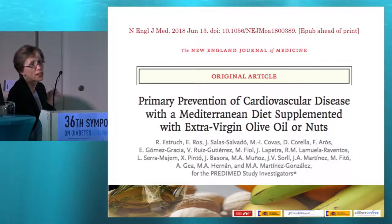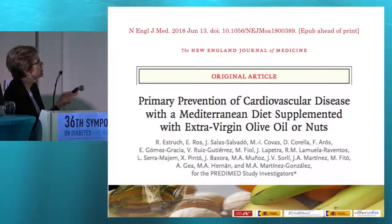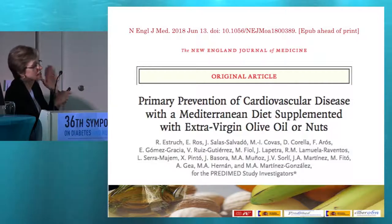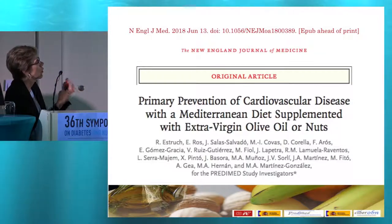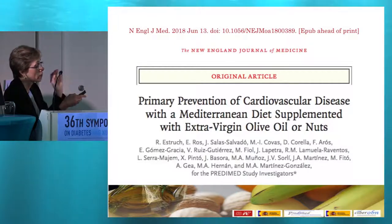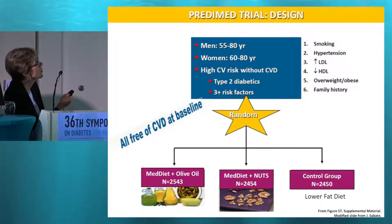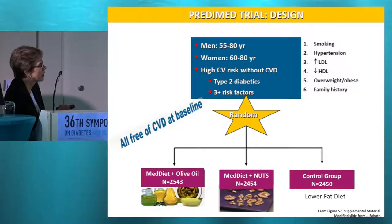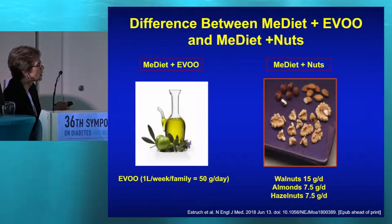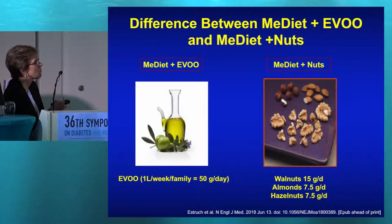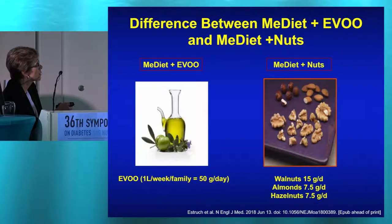Let's turn our attention now to PREDIMED — a seminal study on the primary prevention of cardiovascular disease with a Mediterranean diet supplemented with extra virgin olive oil or nuts. This study was done in Spain with very high-risk individuals between the ages of 55 and 80, randomized to one of three treatment diets: Mediterranean diet with olive oil, Mediterranean diet with nuts, or a controlled lower-fat diet. The nut group consumed 30 grams of nuts per day — 15 grams of walnuts, 7.5 grams of almonds, and 7.5 grams of hazelnuts. The olive oil diet consumed 50 grams per day.